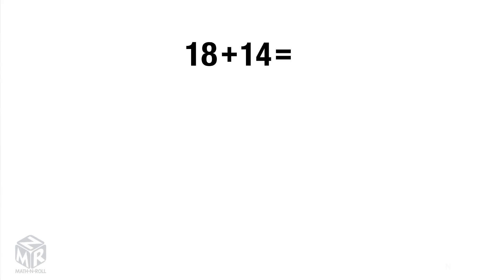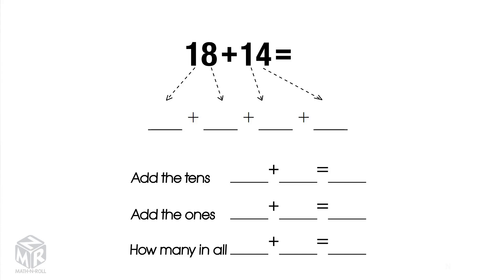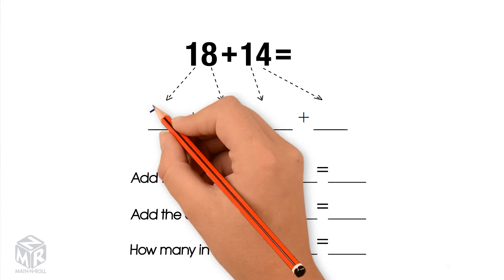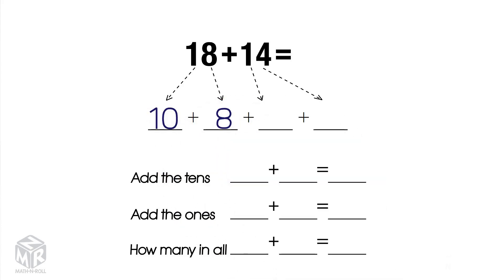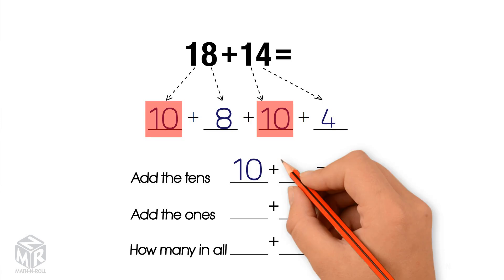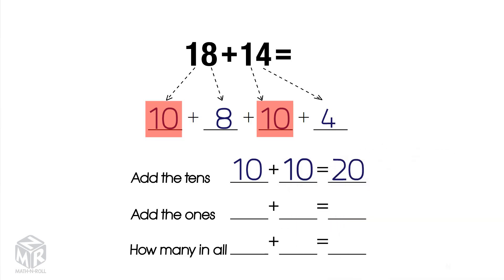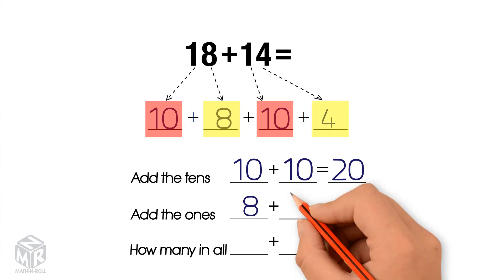Let's try another example: 18 plus 14. 18 breaks apart into 10 and 8. 14 breaks apart into 10 and 4. Now we add the tens: 10 plus 10 equals 20. Next, we add the ones: 8 plus 4 equals 12.